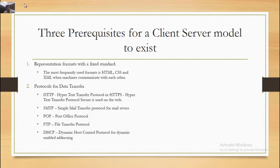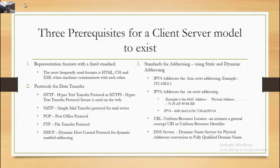Other protocols include SMTP (Simple Mail Transfer Protocol) for mail servers, POP (Post Office Protocol), FTP (File Transfer Protocol), and DHCP (Dynamic Host Control Protocol) for dynamic addressing. Third, Standards for Addressing using static and dynamic addressing — IPv4 uses 4-octet addressing, for example 192.168.0.1.